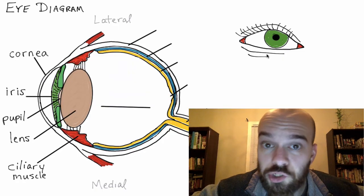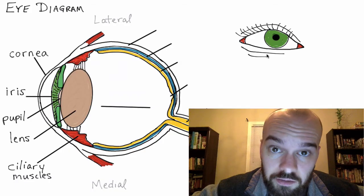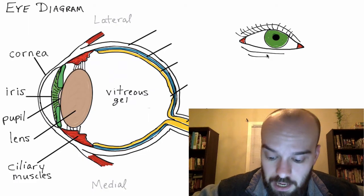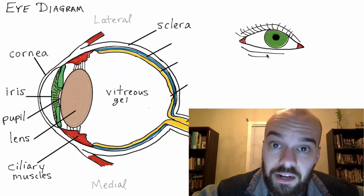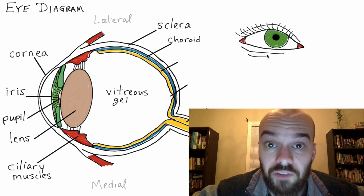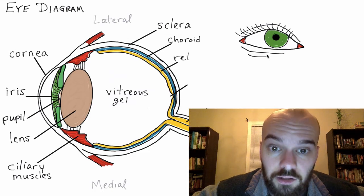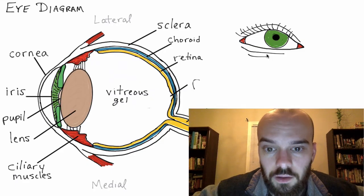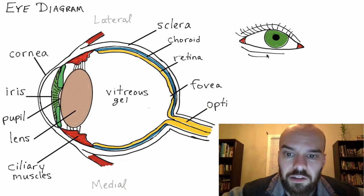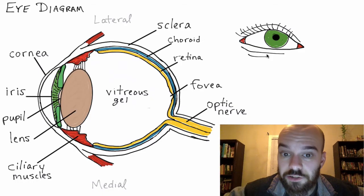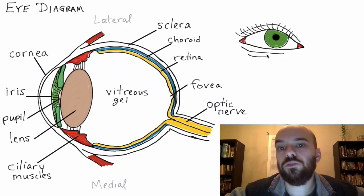You've got the ciliary bodies that are going to help change the shape of the lens. You've got the vitreous gel, which is going to give pressure to the eye. You have the sclera — the white of the eye that protects the insides and holds those contents in. You've got the choroid layer, which is going to provide nutrients and oxygen to the retina. You've got the retina itself, which will detect wavelength and light intensity. You've got the fovea. And finally, you've got the optic nerve, which is going to send action potentials or signals from the retina to the brain.